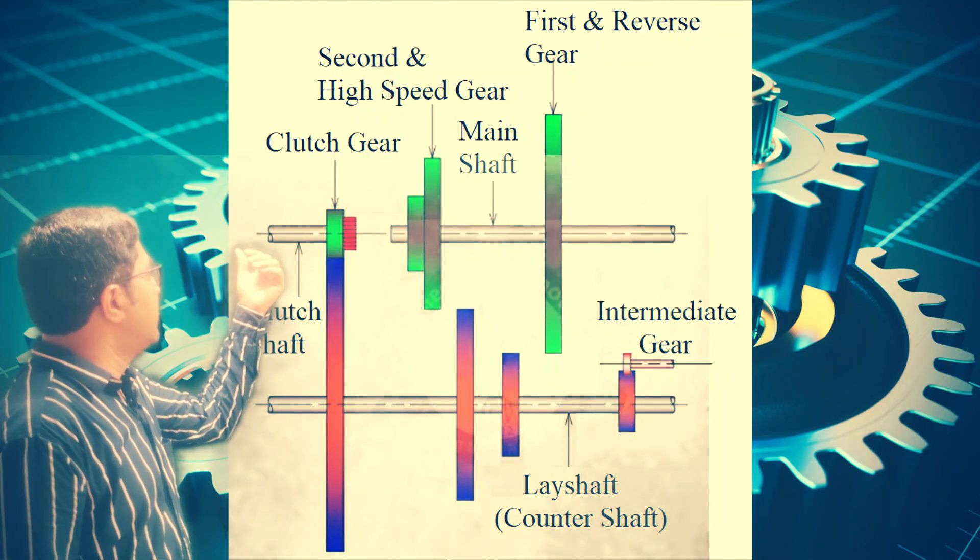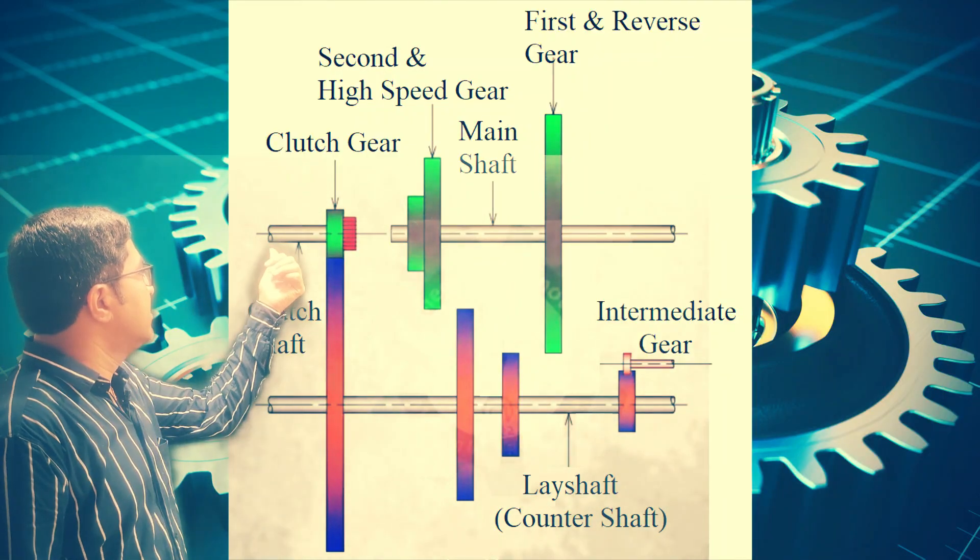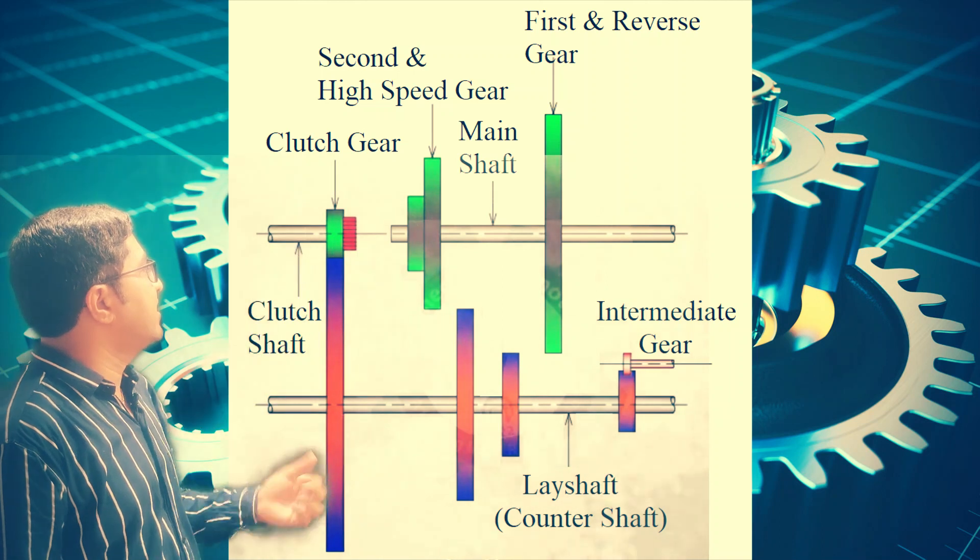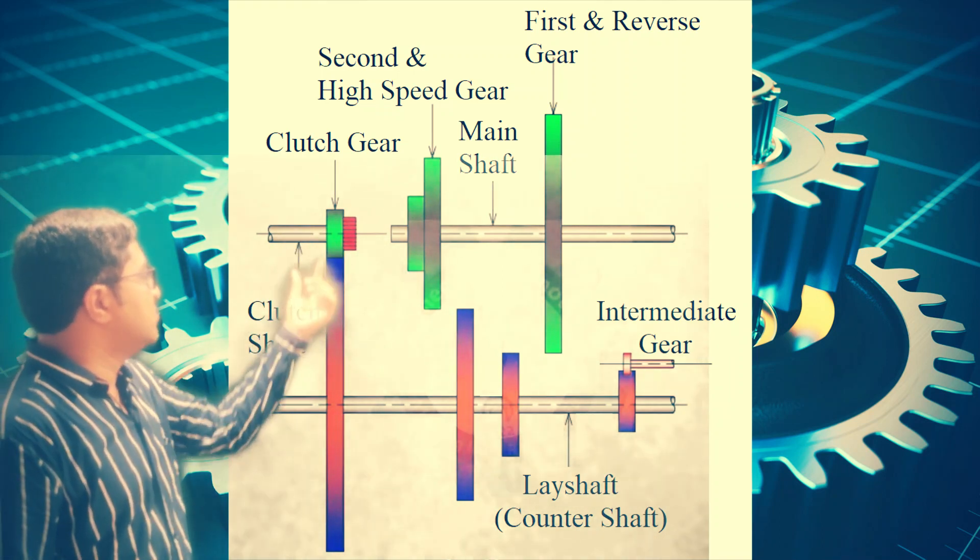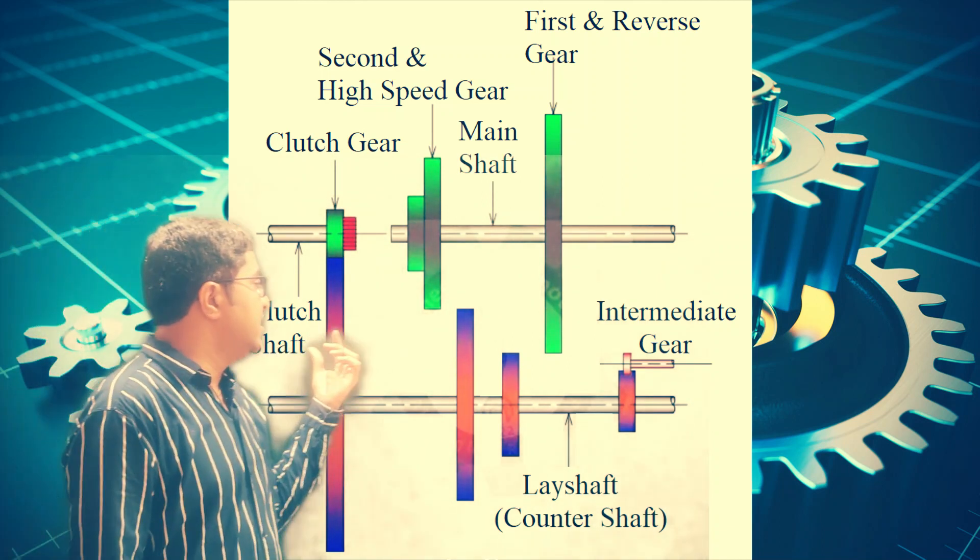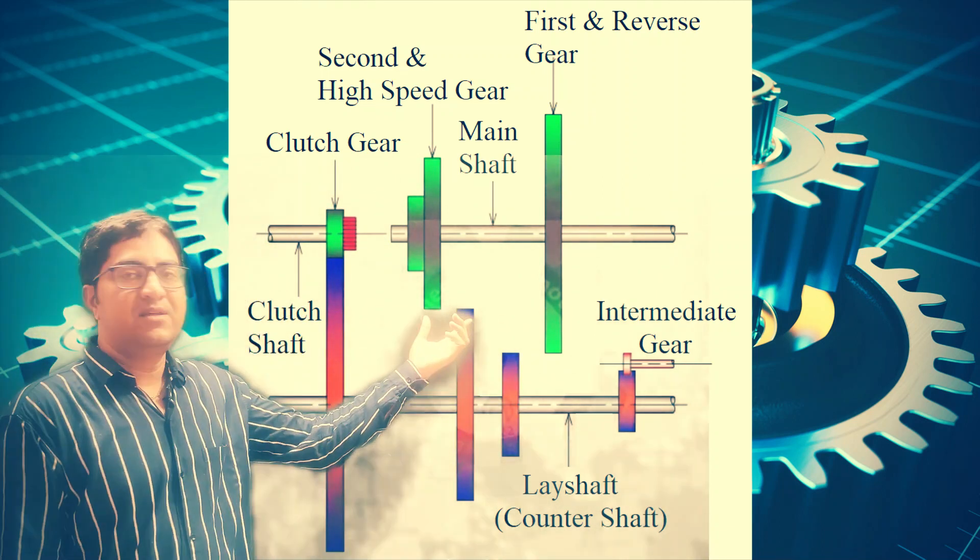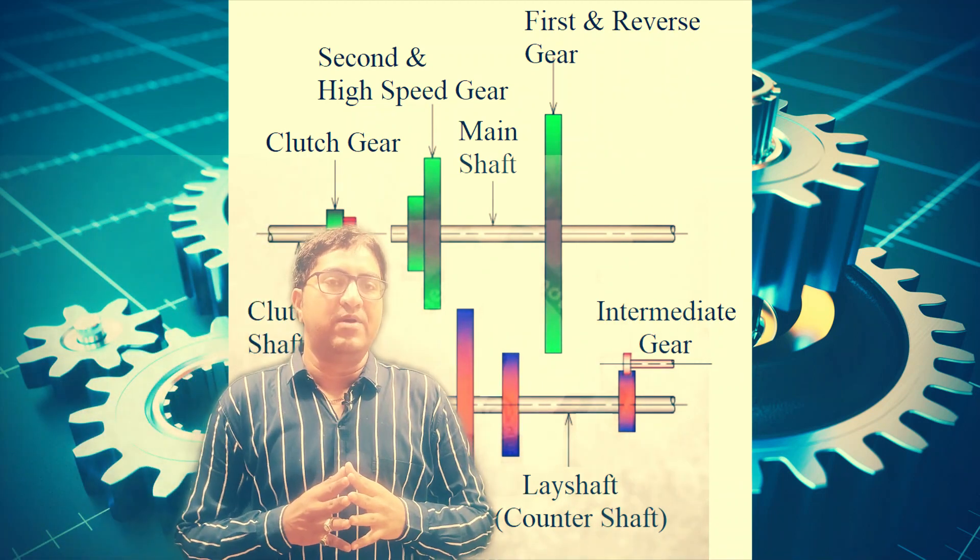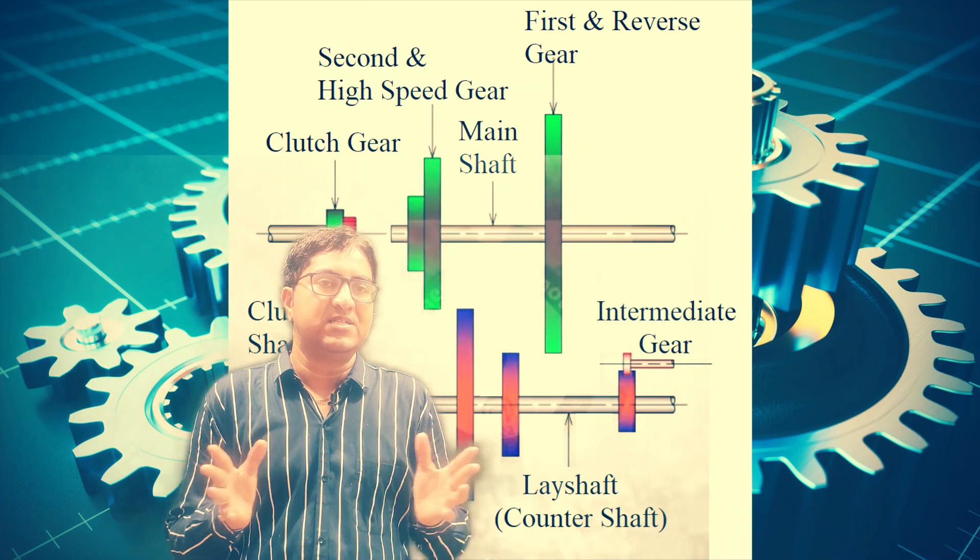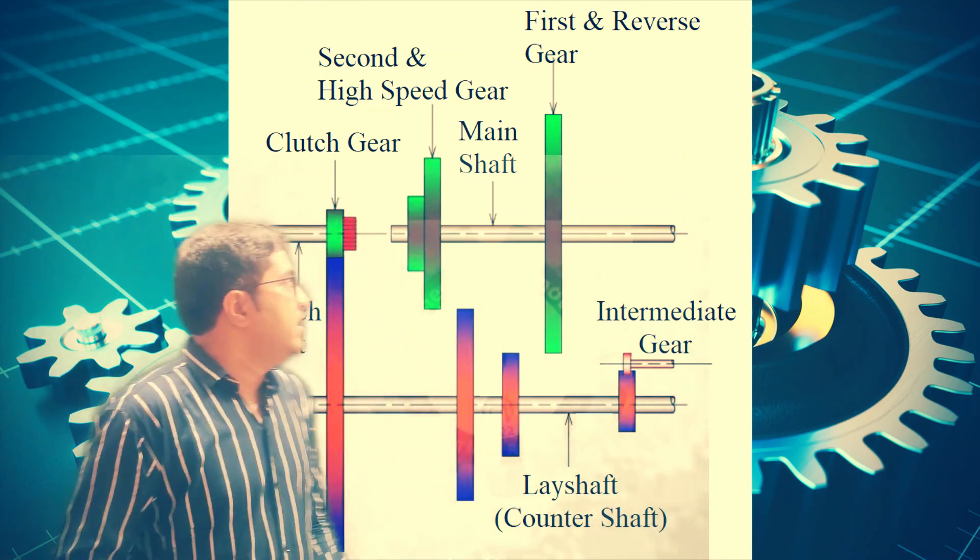This power is supplied to the clutch shaft. This clutch shaft is connected with the clutch gear, and this clutch gear is always meshed with the gears on the layshaft. These gears on the layshaft are permanently mounted, means it will not shift.